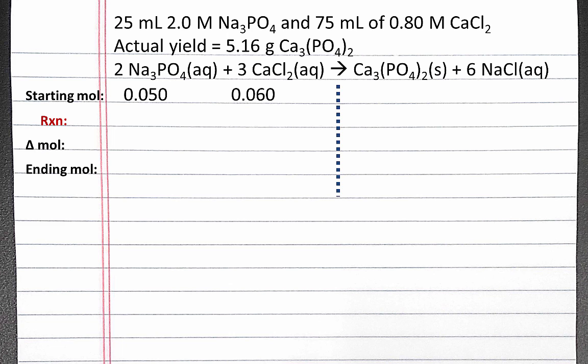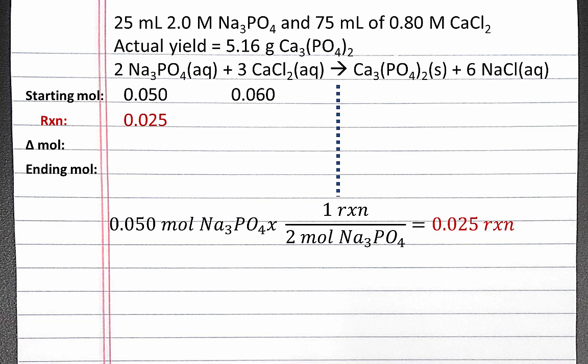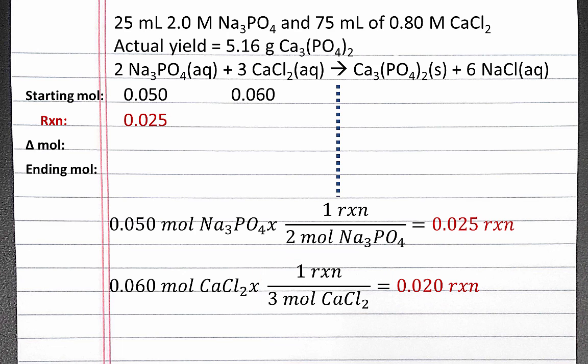Now we can calculate how many reactions we can perform with each of our reactants. We have 0.05 moles of sodium phosphate, and we need 2 moles for one reaction, so we can perform 0.025 reactions. We have 0.06 moles of calcium chloride, and we need 3 moles for every one reaction, so we can perform 0.02 reactions with our calcium chloride. Our limiting reagent is the one that runs out first. We can perform fewer reactions with calcium chloride, so that's our limiting reagent.